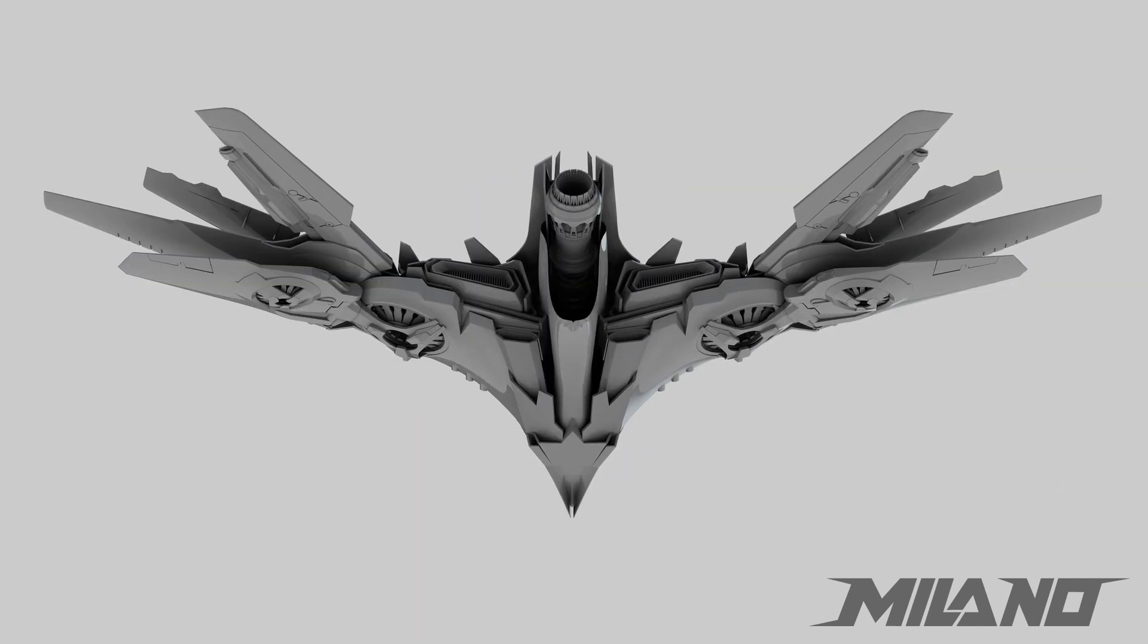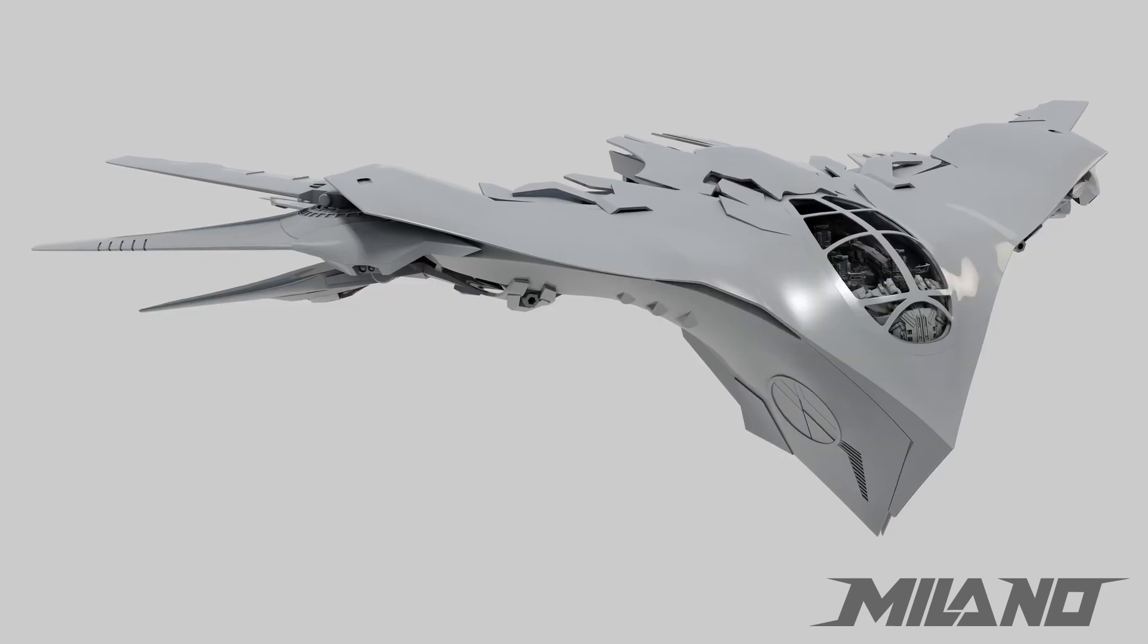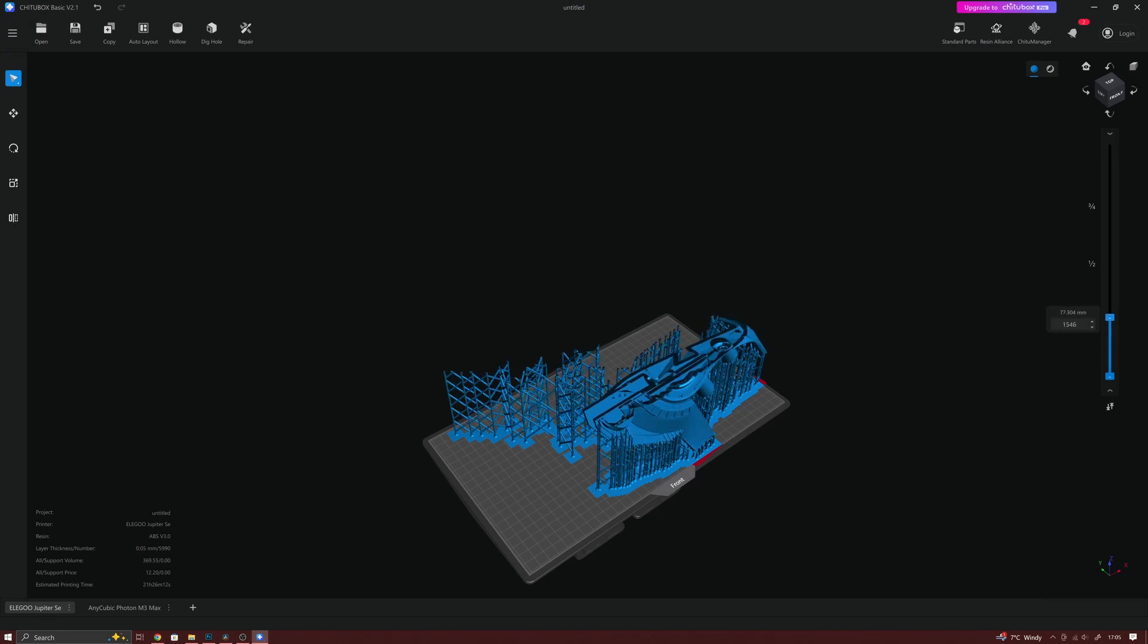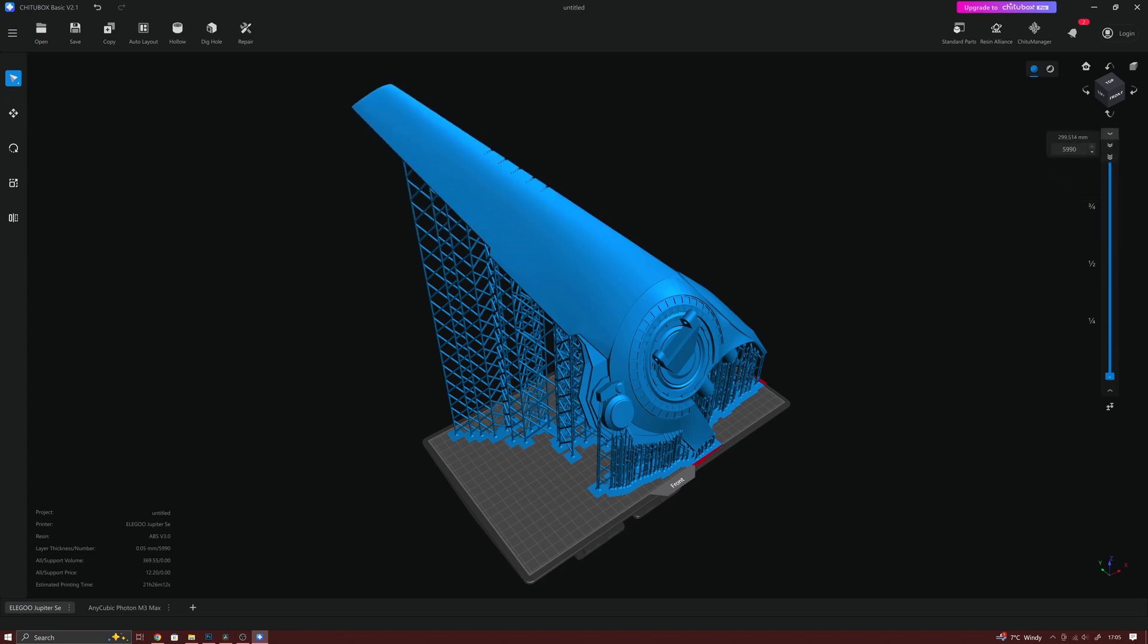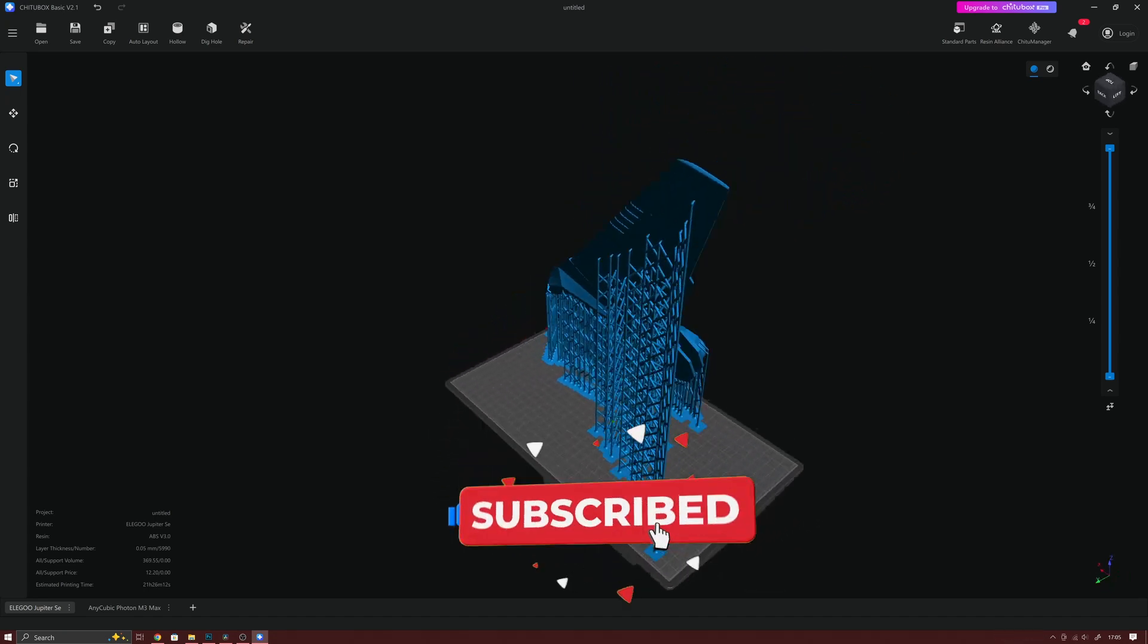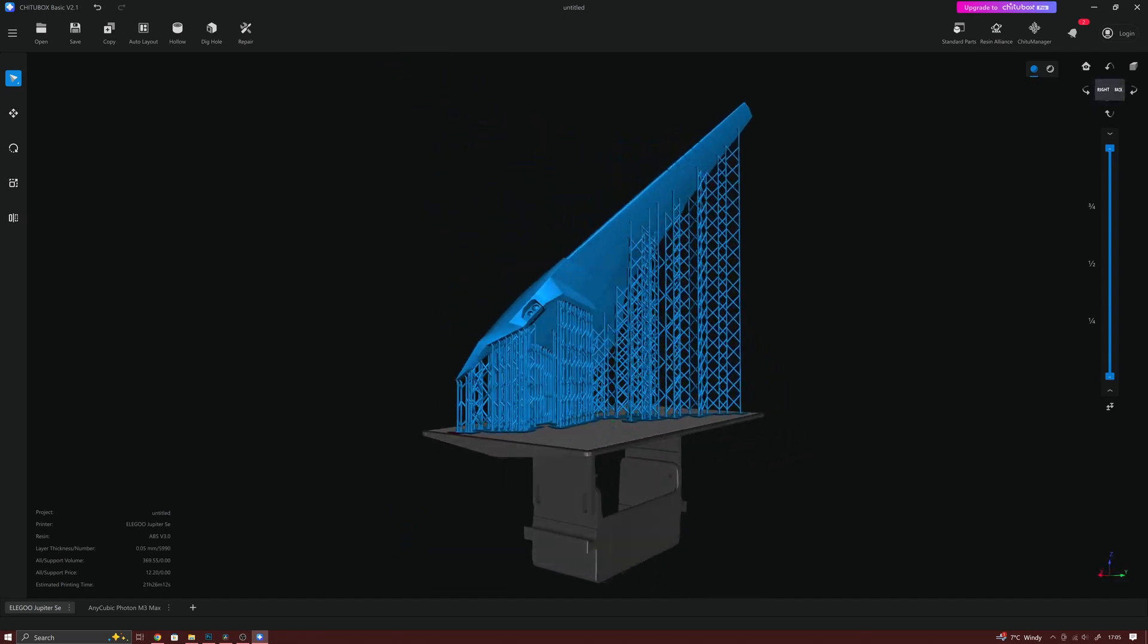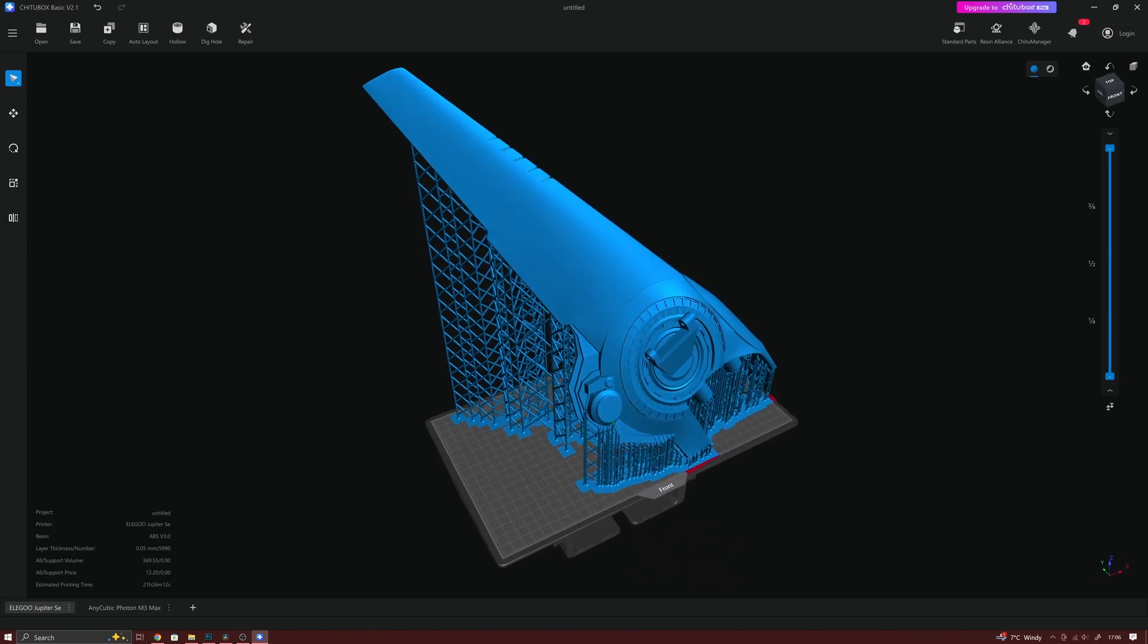I'm going to be printing Milano on my Elegoo Jupiter SE. First of all I need to import and prepare the parts in the slicer. I'm using ChittuBox which I gave a brief review of in my previous Milano episode. Here's the main wing hollowed with drain holes and supported in the slicer. This part is huge. It's 39 centimeters long or 15 and a half inches in American and it's a bit of a gamble for printing but I'm feeling lucky. It only just fits on the build plate with no room to spare.